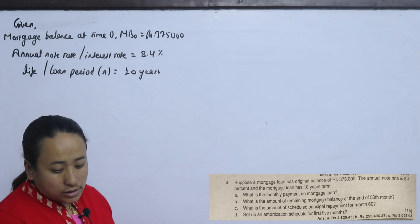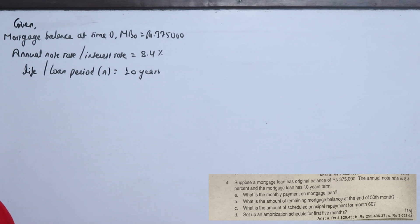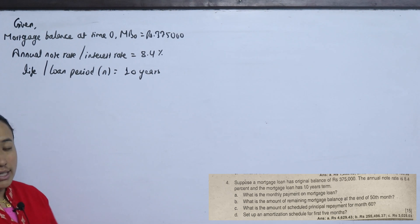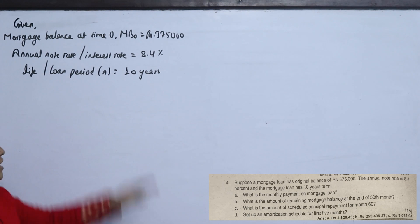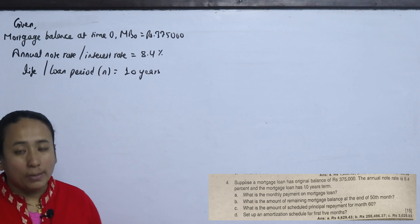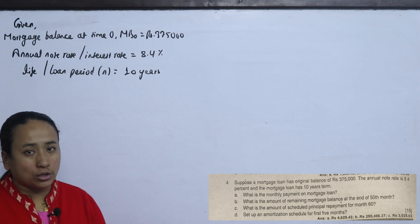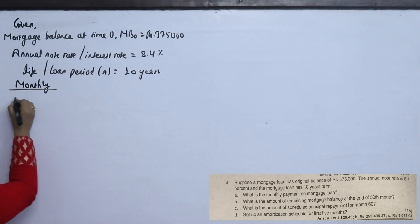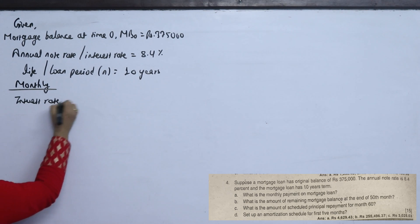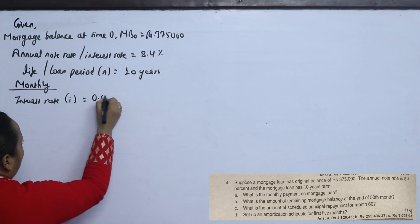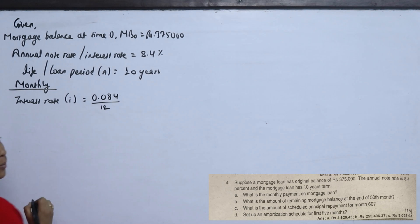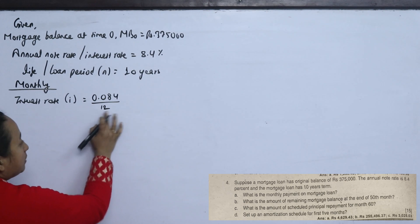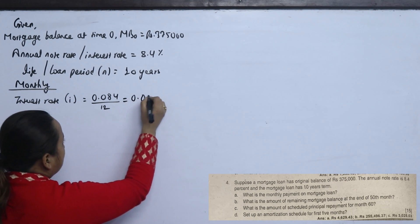The question asks: what is the monthly payment on the mortgage loan? To calculate, we use the monthly payment formula. We convert the annual interest rate to monthly: 0.084 divided by 12 equals 0.007. The loan life in months is 10 years multiplied by 12, which equals 120 months. So i equals 0.007 and n equals 120.